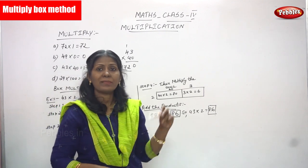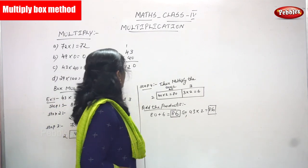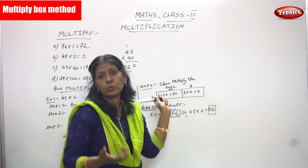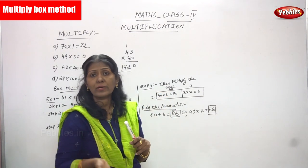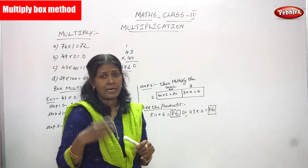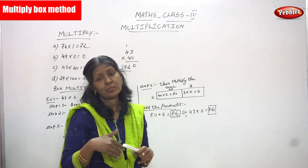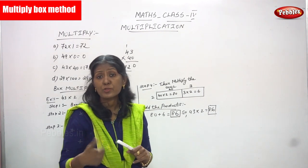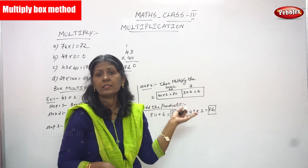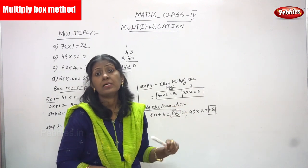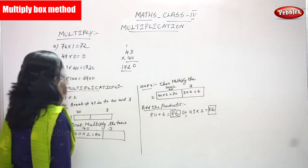Now we are going to see multiplication. We already know what multiplication is, what the terms are, what an array is, and the rules and regulations of multiplication. Now we are going to do everything through examples. So let's start. First one is: multiply.